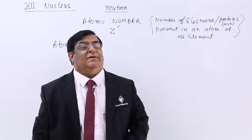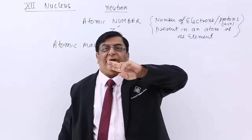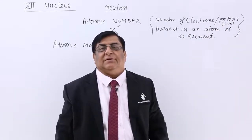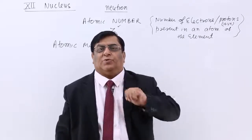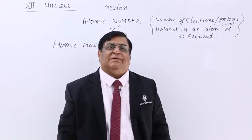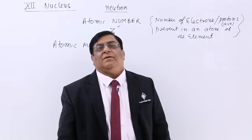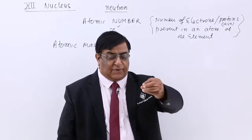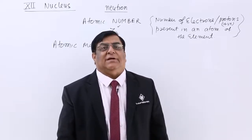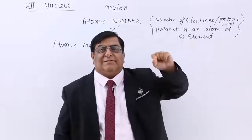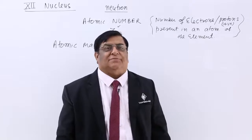Why should it be different than Z? Because Z is representing the number of protons. If there are 6 protons in a certain element, then its mass should also be equal to 6 protons. But we found that it is not equal to 6 protons — it is far more than that. In the case of heavier elements, we found that the number of protons do not match with the total mass of the atom.